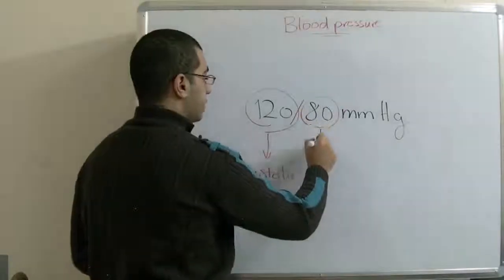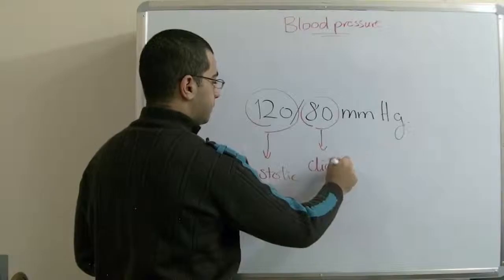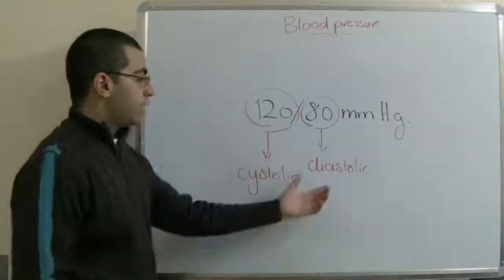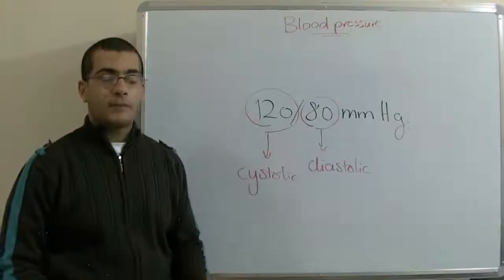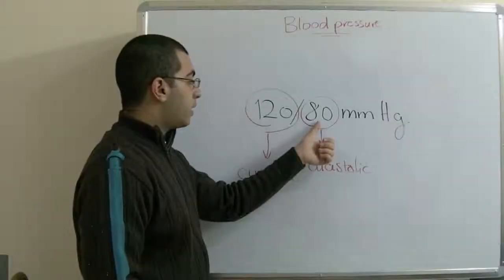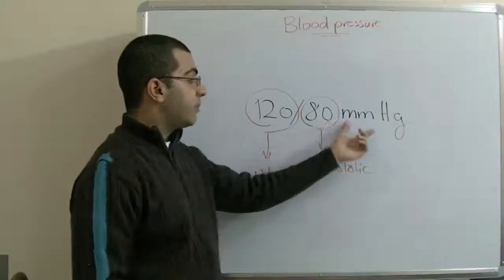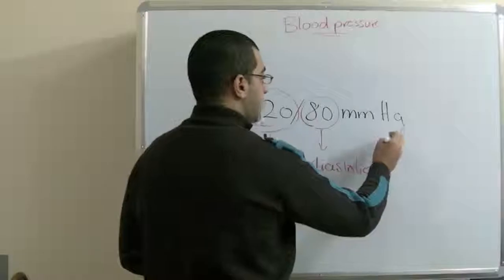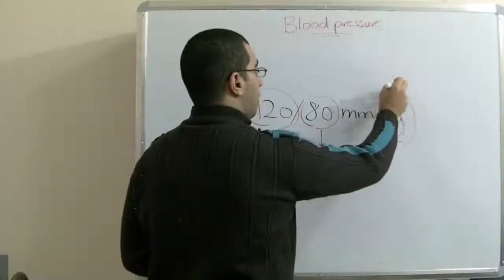80 is called the diastolic reading. The diastolic is when the heart relaxes. When the heart muscle relaxes, the blood pressure is 80 mmHg. Hg is the symbol of mercury.